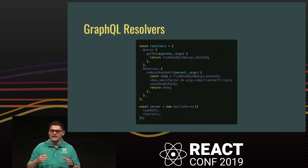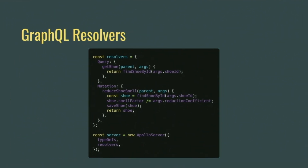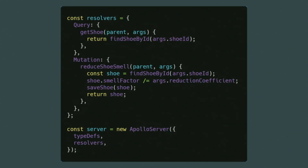Now we have our GraphQL schema. We have to tell our node server how to get this data. We do that with what Apollo calls resolvers. We define a resolver for each query and mutation in our schema, which is the entry point for our API to begin querying and mutating our database as needed. This is a one-to-one mapping from the schema we defined earlier. We have a callback with our get shu query and reduce shu smell mutation. We make a database call to find shu by ID and save shu as needed, and then return an object that matches the schema we defined earlier in our GraphQL.